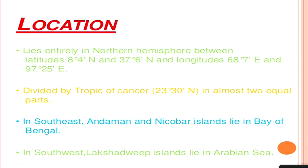India is surrounded by three seas: the Bay of Bengal on the eastern side, the Arabian Sea on the western side, and the Indian Ocean in the south. These oceans are also home to island groups. In the Bay of Bengal we have the Andaman and Nicobar Island group, whereas in the Arabian Sea we have the Lakshadweep Island group. These islands are known for their diversity. India thus has great variety — islands, ocean boundaries, and a good portion of land.